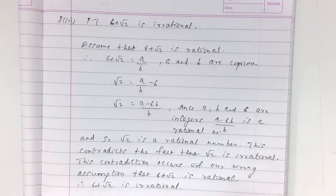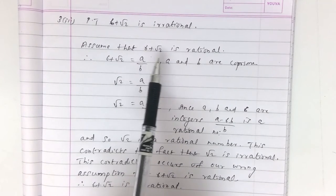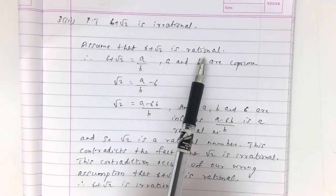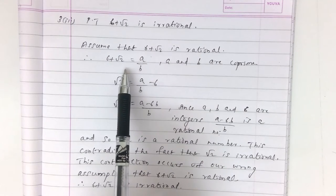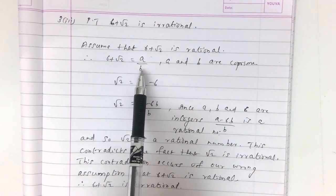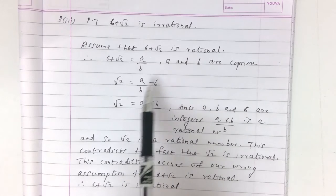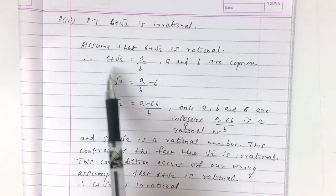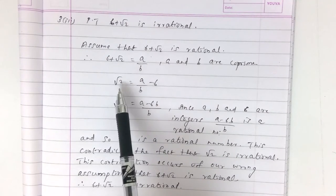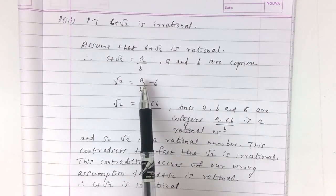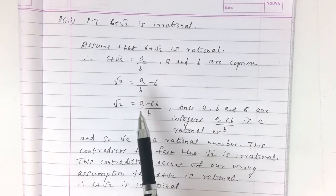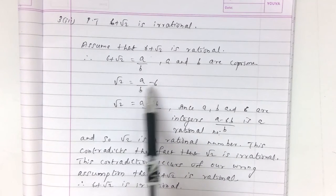Last question: prove that 6 plus root 2 is irrational. We assume that 6 plus root 2 is rational. Then 6 plus root 2 equals A by B, where A and B are co-prime. Rearranging, root 2 equals A by B minus 6, and taking LCM, root 2 equals A minus 6B divided by B.